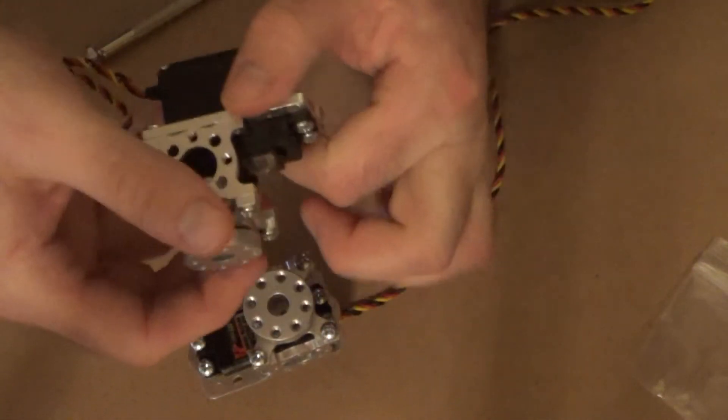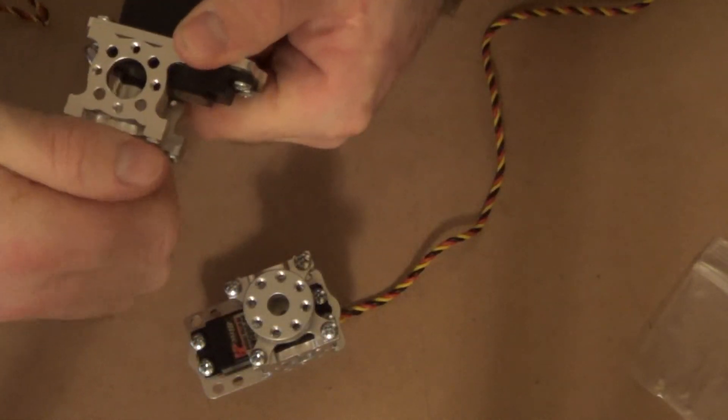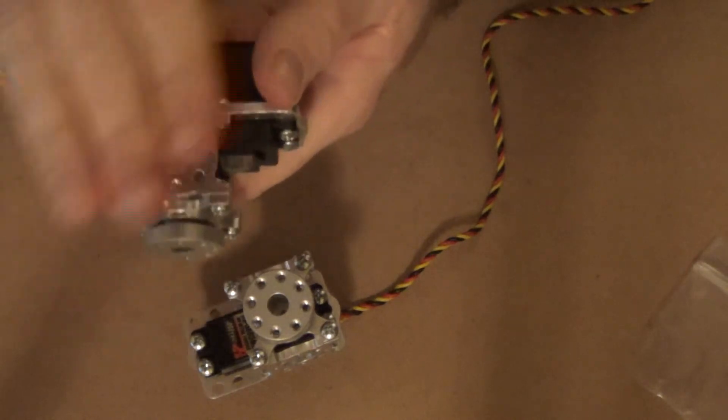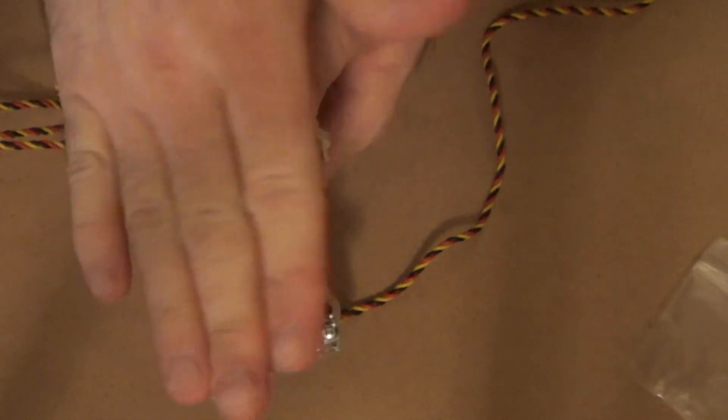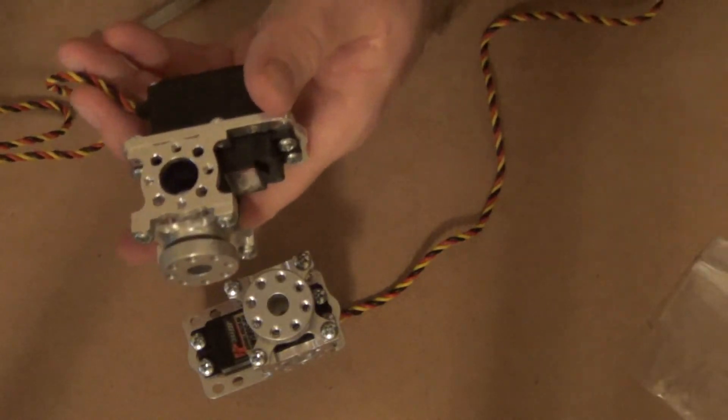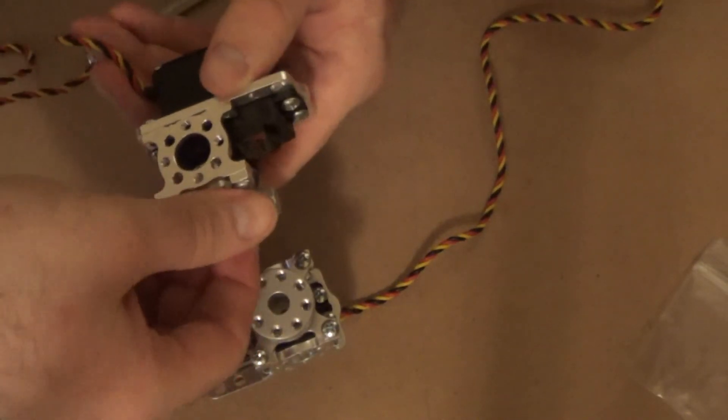So you can have this drive shaft here, which I will be, which I could say for example use as a roll adjustment, would just be here, like this.